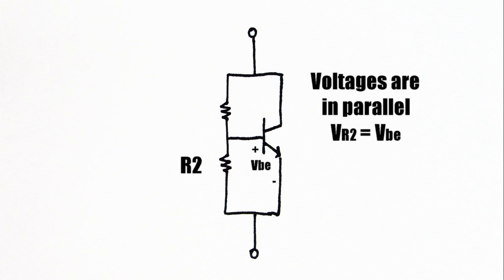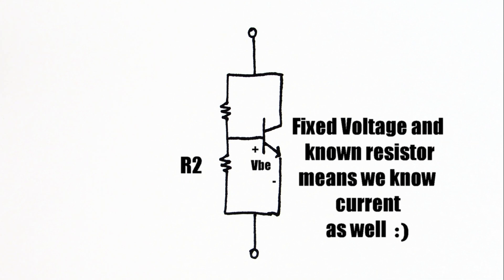Therefore, the voltage across R2 equals the base emitter voltage. Because we know the voltage across the resistor, we also know the current.